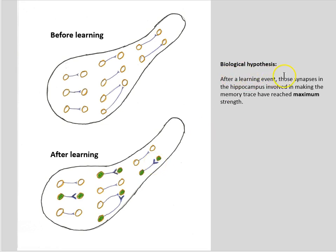After a learning event, those synapses in the hippocampus involved in making the memory trace have reached a maximum strength. So the suggestion here is that this plasticity can't keep happening, can't go on forever. There's a limit to how strong you can make these synapses.